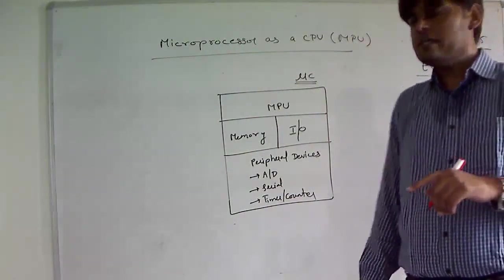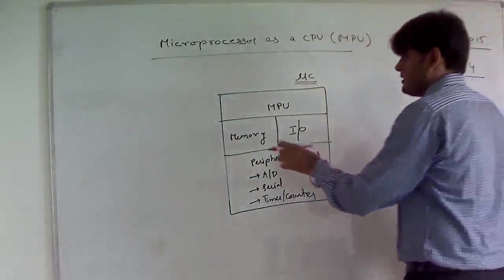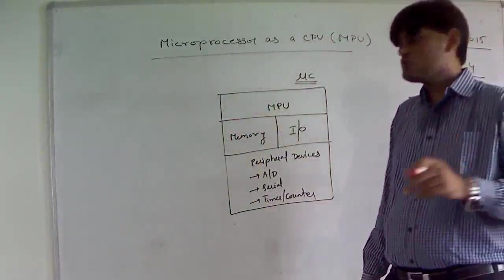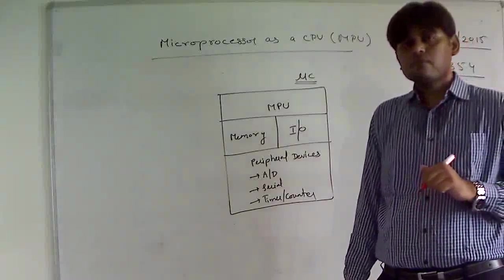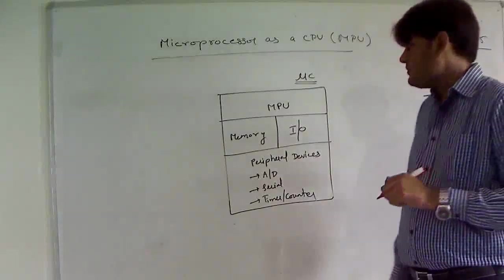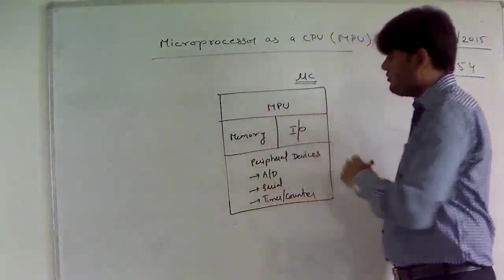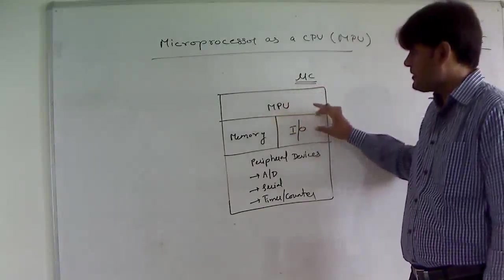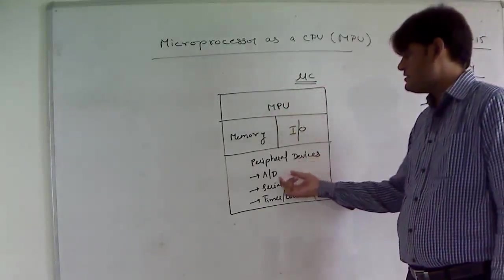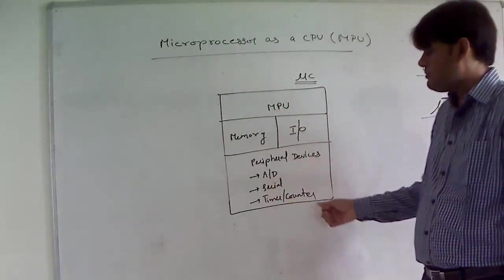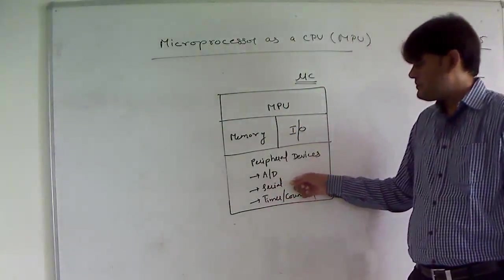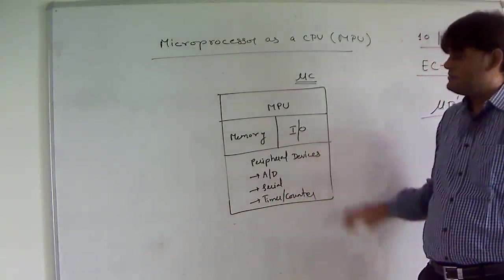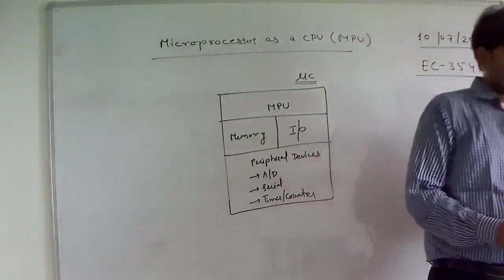The microcontroller has limitations in terms of memory — the memory is fixed by the manufacturer. So there is a criteria to choose a microcontroller. The block diagram of a microcontroller includes an on-chip micro processing unit, memory, I/O, and peripheral devices. That is all about the microprocessor as a CPU.